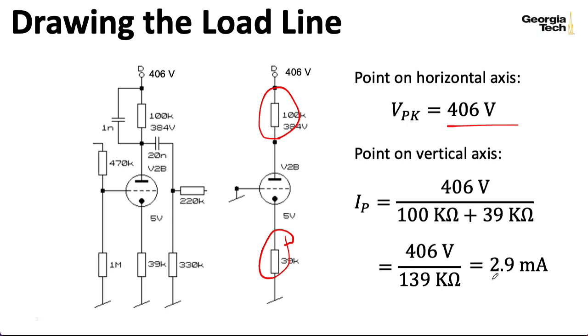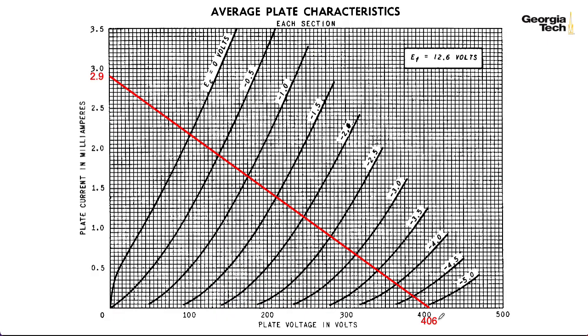So this gives me two points I can plot on my chart. So down here on the lower right, I have 406 volts. In the upper left-hand corner, I have 2.9 milliamps. And what we now need to do is figure out how to draw a grid line that we can intersect with this to figure out the DC operating point.